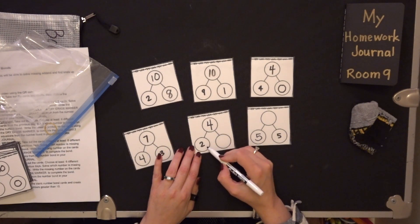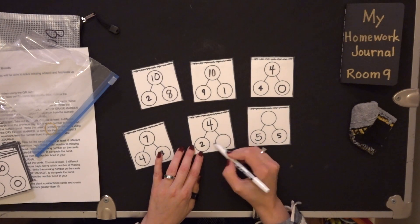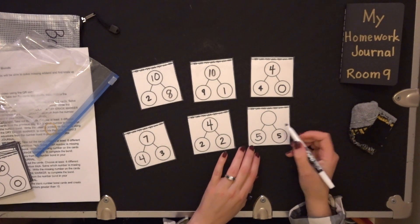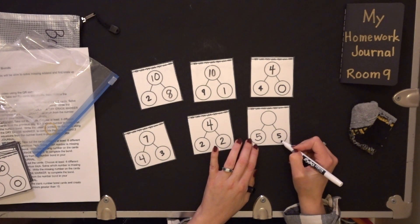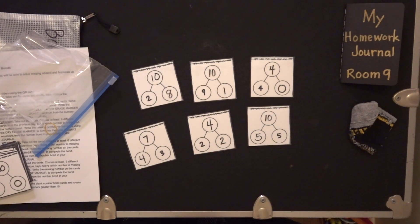This one I have the whole and only one part, so I have to be a detective and figure out that other part. Two plus two is four. Then I have two parts, five and five. I know my double facts, so five plus five equals ten.